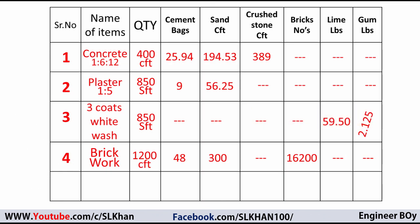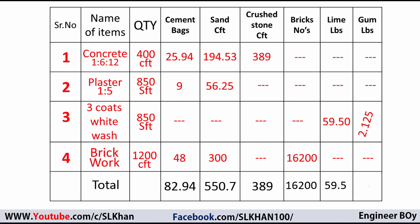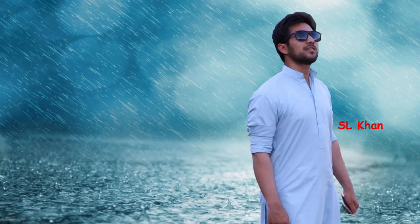Finally, we sum all material quantities for the total project. Total cement = 25.94 + 9 + 48 = 82.94 bags. We also total the sand, crushed stone, number of bricks, lime, and gum. This completes the material statement — it was straightforward calculation. If you like these types of videos, please hit the subscribe button, press the bell icon, and never miss an update from Any Engineer Boy. Thank you for watching, see you next time!